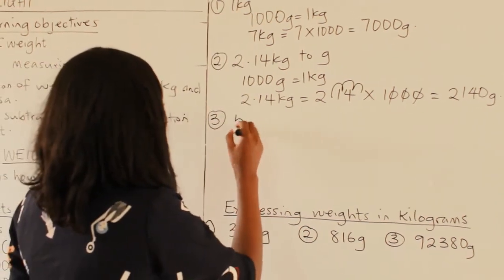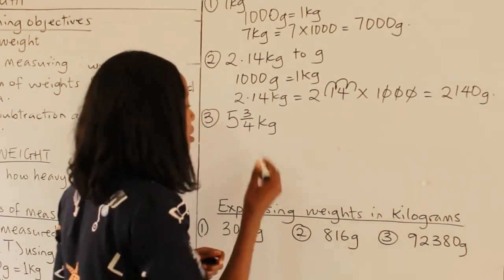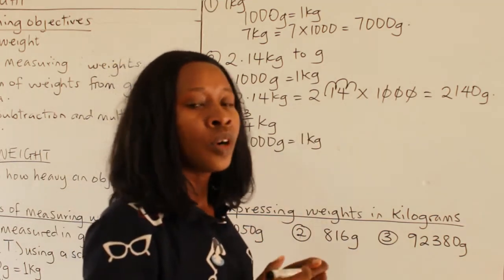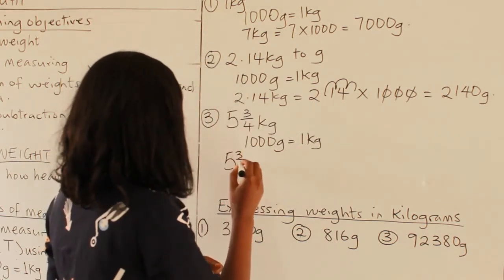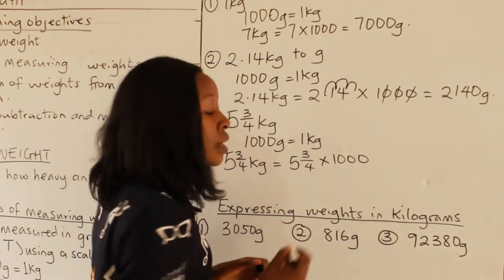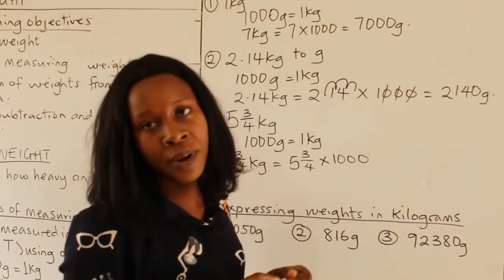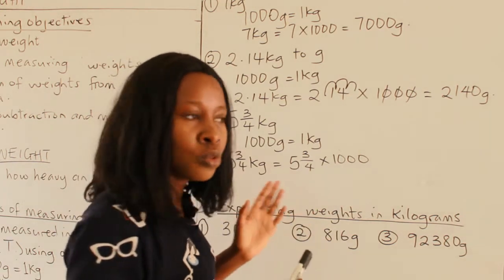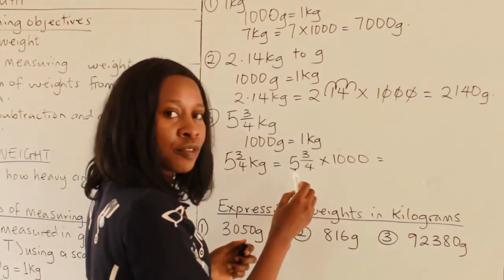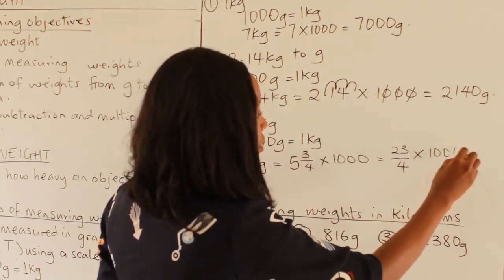Question number 3: 5 whole number 3 over 4 kilograms to grams. The relationship is still 1,000 grams equals 1 kilogram, so we multiply by 1,000. It's easier to first change 5 and three-quarters to an improper fraction: 4 times 5 is 20, plus 3 gives us 23 over 4. Then we have 23 over 4 times 1,000 over 1.